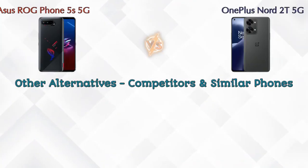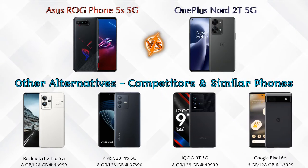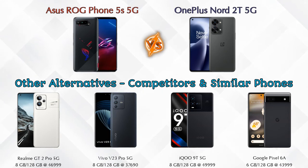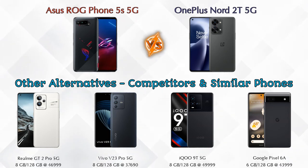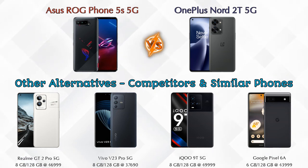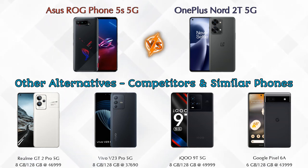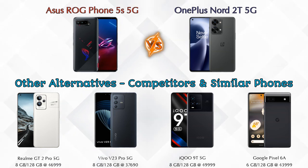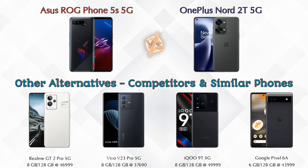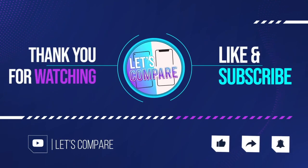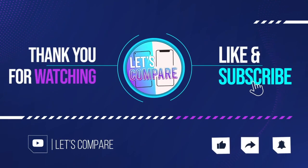Now let's talk about other competitors at the same price segment. The first is the Realme GT2 Pro 5G, second is the Vivo V23 Pro 5G, third is the iQOO 9 5G, and the last is the Google Pixel 6a 5G. Details about all these competitor phones are available in the description. If you liked our video, please like and subscribe — thanks for watching!